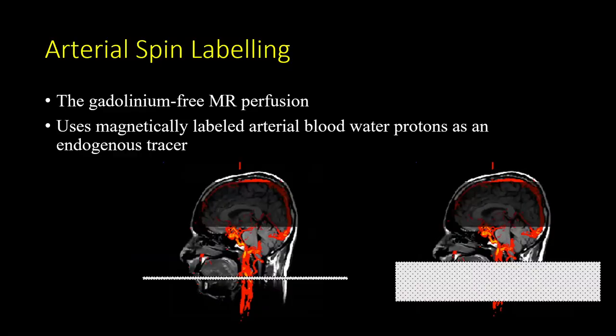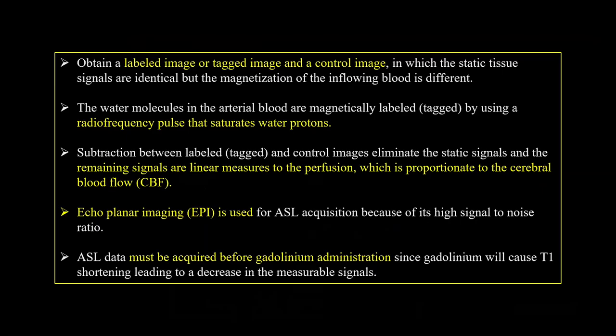Just to revise briefly, arterial spin labeling is a gadolinium-free MR perfusion technique which uses magnetically labeled arterial blood water protons as an endogenous tracer. We obtain two sets of images: labeled or tagged images and a control image set. By subtracting these two data sets, we acquire cerebral blood flow maps. ASL is an echoplanar imaging technique and must be acquired before gadolinium administration, since gadolinium will cause T1 shortening, leading to a decrease in measurable signal.